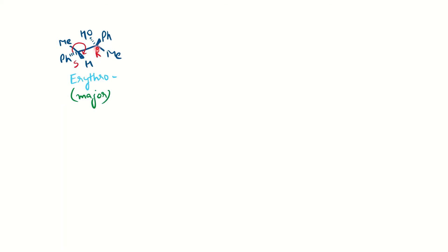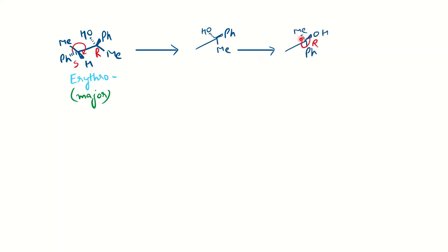Now we need to find the RS nomenclature of the newly generated carbon center. I have written this stereocenter separately. By keeping in mind that the lowest priority group should be on the wedge line, we rotate the molecule and bring Me onto the wedge line — rotating 120 degrees, OH goes to the Ph position and Ph comes to the Me position. Going from highest priority: OH, Ph, Me — it is a clockwise direction, giving R configuration. So this particular isomer has SR nomenclature.